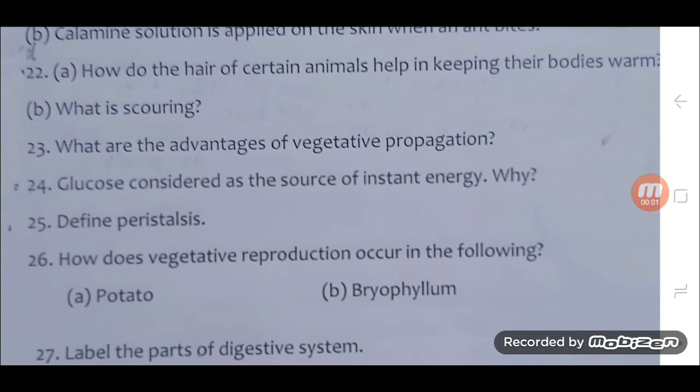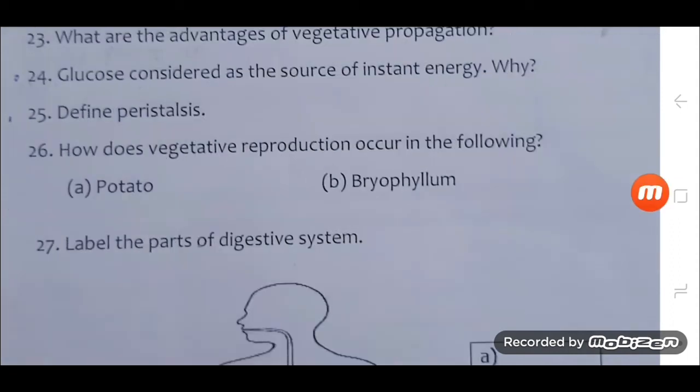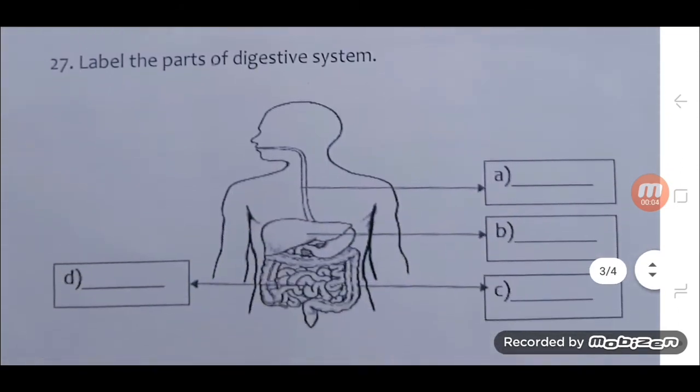23. What are the advantages of vegetative propagation? 24. Glucose considered as the source of instant energy. Why? 25. Define peristalsis. 26. How does vegetative reproduction occurs in the following? A. Potato B. Bryophyllum. 27. Label the parts of digestive system.